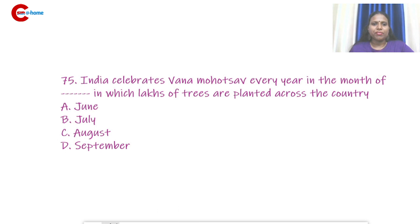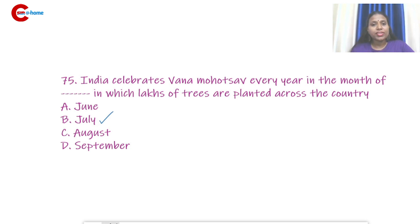Question number 75: India celebrates Van Mahotsav every year — in which month are trees planted across the country? The answer is the first week of July, from the 1st to the 7th. Van Mahotsav is celebrated to create awareness for forest conservation and to save the environment.